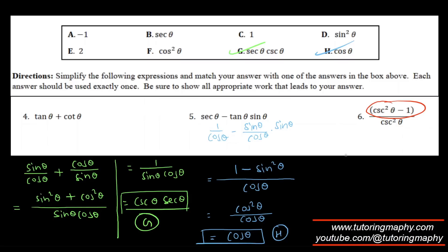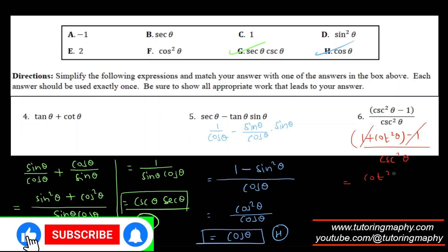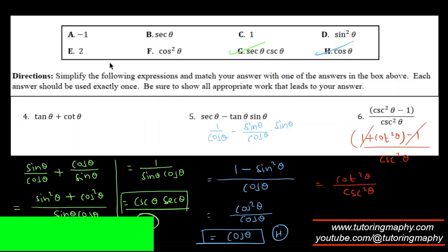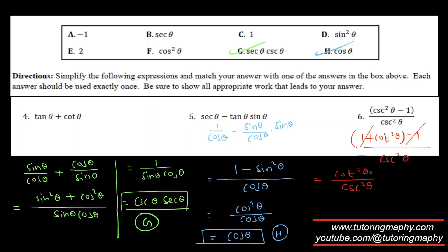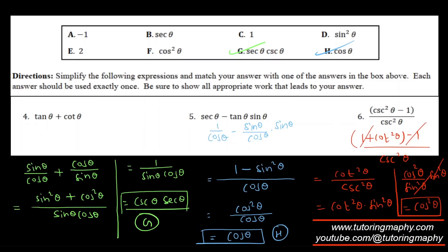For question 6, I use the Pythagorean identity: csc²θ = 1 + cot²θ. Substituting, the 1s cancel, leaving cot²θ over csc²θ. Since 1/csc²θ = sin²θ, we have cot²θ·sin²θ. Writing cot²θ as cos²θ/sin²θ, the sin²θ terms cancel, leaving cos²θ — that's option F.